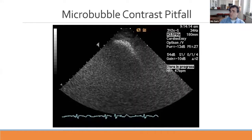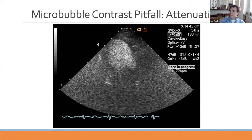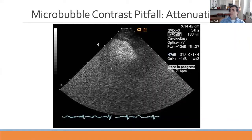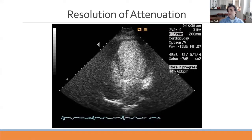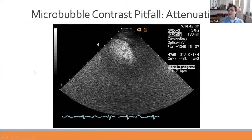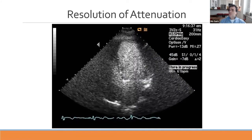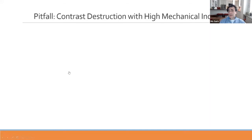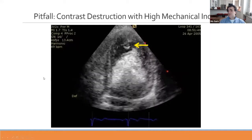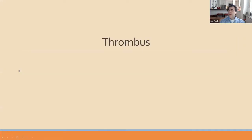What are the pitfalls of microbubble contrast use? One pitfall is too much contrast causing attenuation: if you wait, the contrast dissipates and progressively more myocardium becomes visible. Another pitfall is contrast destruction with a high mechanical index. At a very high mechanical index of 1.7, bubbles are destroyed at the LV apex; the mechanical index should be much lower.